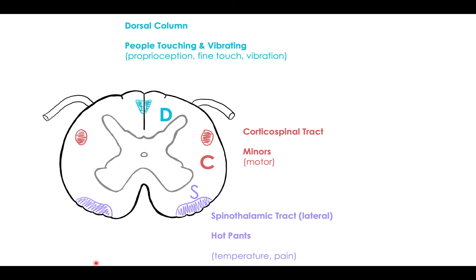Really quick: the dorsal column is for proprioception, fine touch, and vibration. The corticospinal tract is for motor function. And the spinothalamic tract is for pain and temperature — your 'hot pants.'